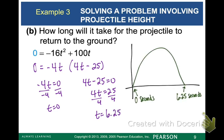Okay, so now let's look at my picture again. The item was launched at zero seconds. It went up in the air, it came back down at 6.25 seconds. So in the end our answer is just going to be 6.25 seconds is how long it takes for the projectile to return to the ground.